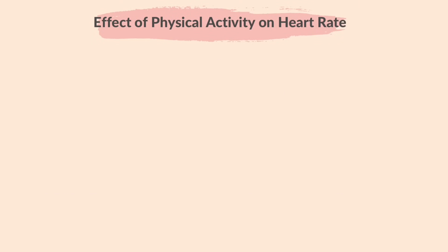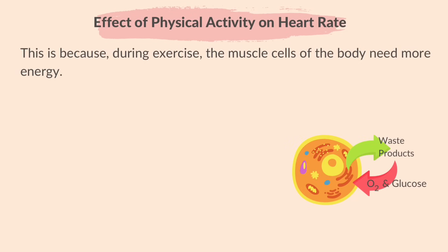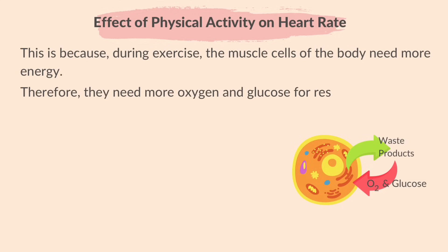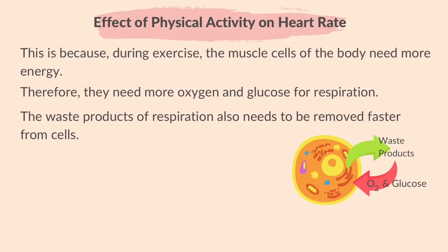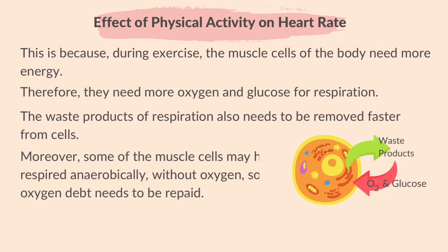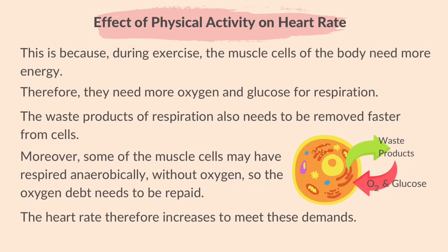Why does physical activity have this effect on heart rate? During exercise, the muscle cells of the body need more energy, and therefore more oxygen and glucose for respiration. The waste products of respiration also need to be removed faster from the cells. Moreover, some muscle cells may have respired anaerobically without oxygen, so the oxygen debt needs to be repaid. The heart rate therefore increases to meet these demands.